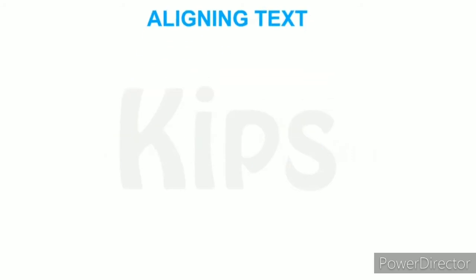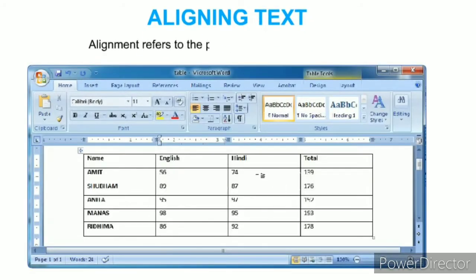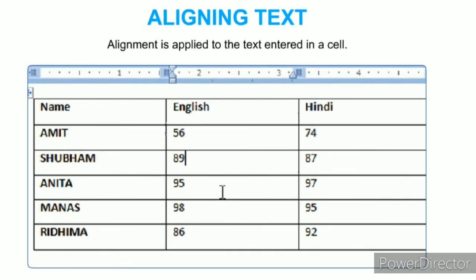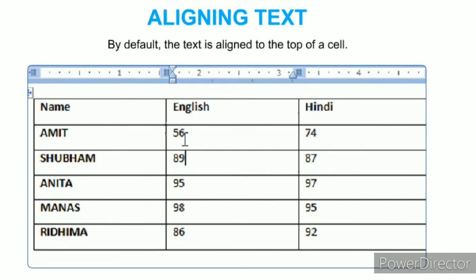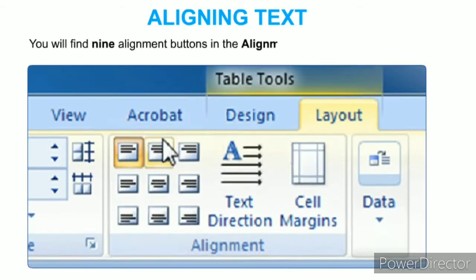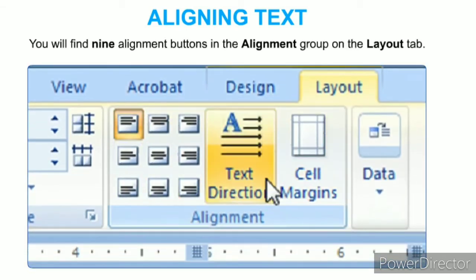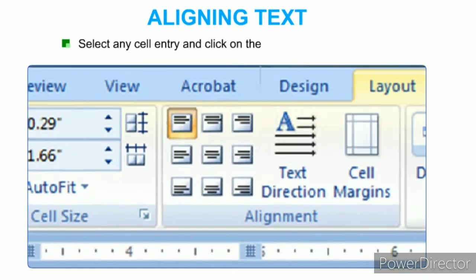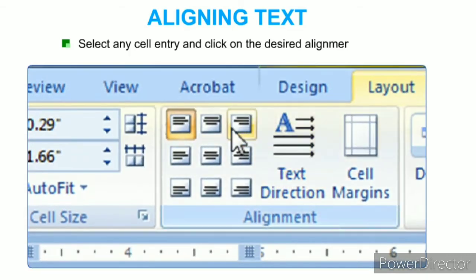Alignment refers to the positioning of text in a table cell. By default, text is aligned to the top of a cell. You will find nine alignment buttons in the Alignment group on the Layout tab. Select any cell entry and click on the desired alignment button.